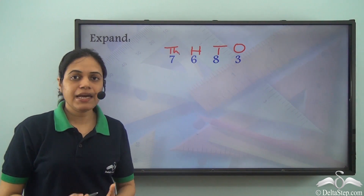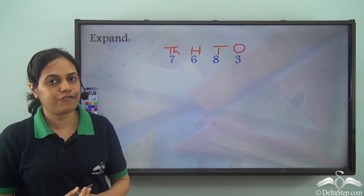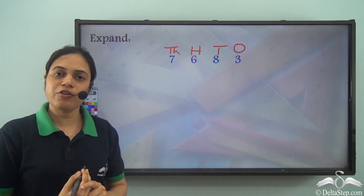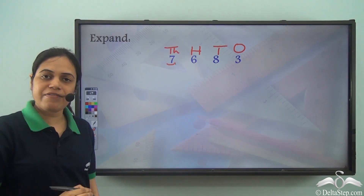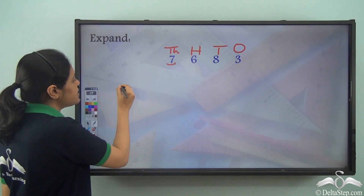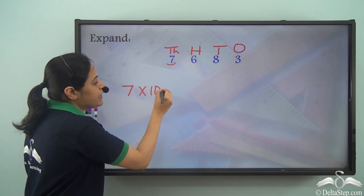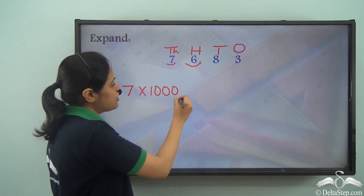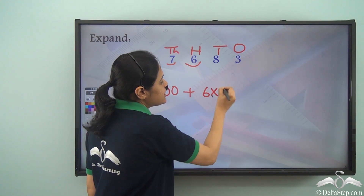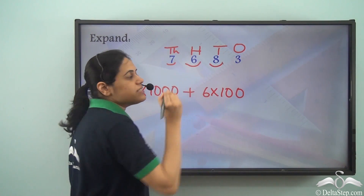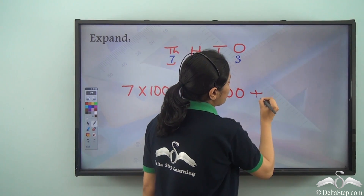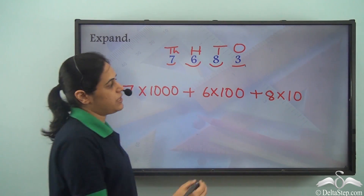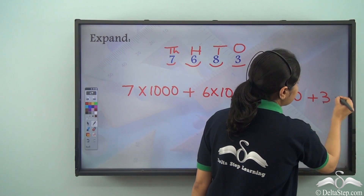Now for expanding, I first need to find the place values of the different digits. I can start either from the right or from the left — let me start from the left. Seven is in the thousands place, so the place value of seven will be seven into thousand. Six is in the hundreds place, so the place value of six will be six into hundred. Eight is in the tens place, so the place value of eight will be eight into ten. And three is in the ones place, so the place value of three will be three into one.